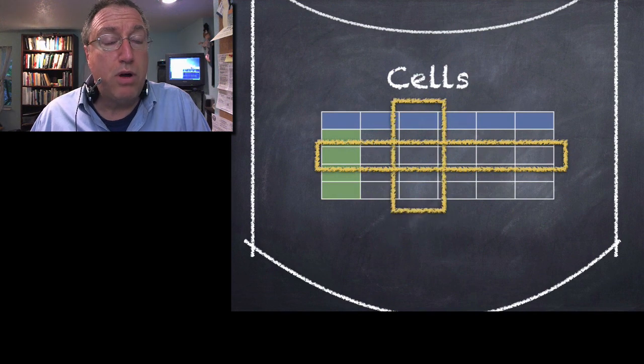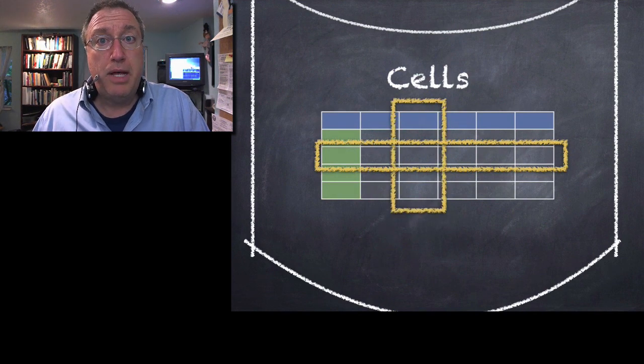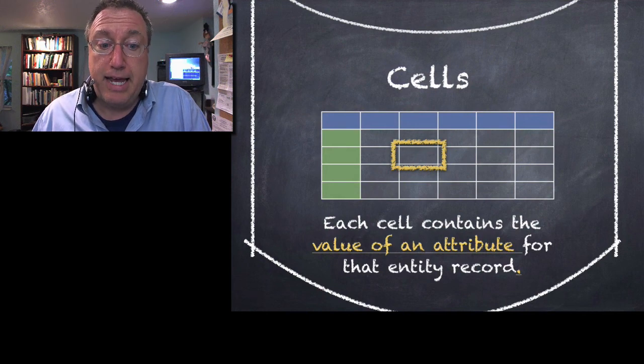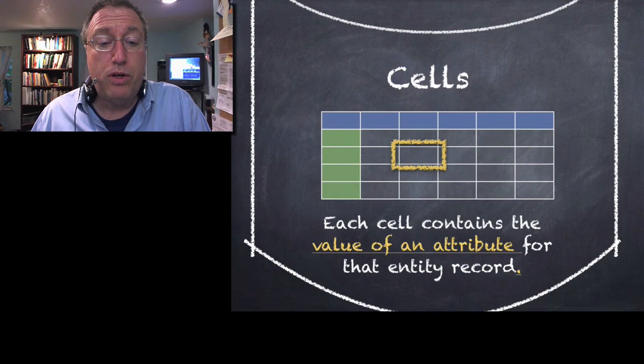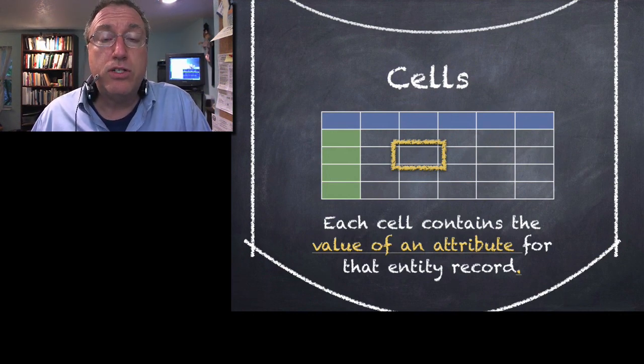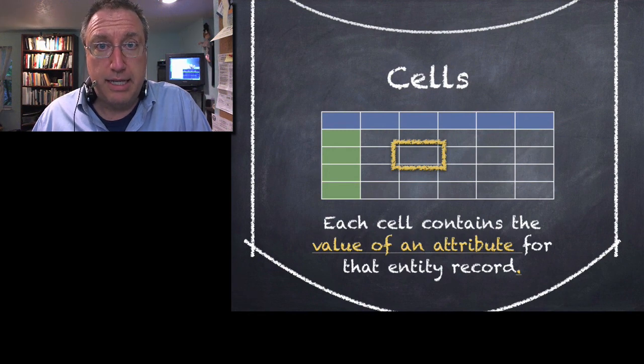Now, when you take a row and you intersect it with a column, you end up with a cell. And each cell contains the value of that attribute for that particular entity record. We take the data in the world and we organize it into entities and attributes and we store it in cells in these tables.